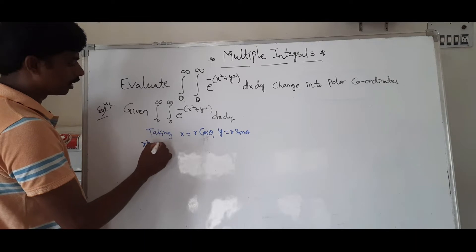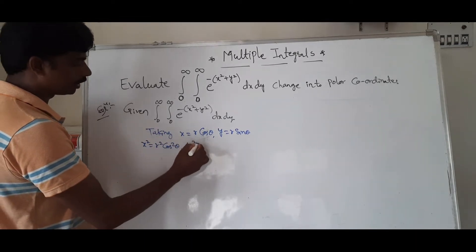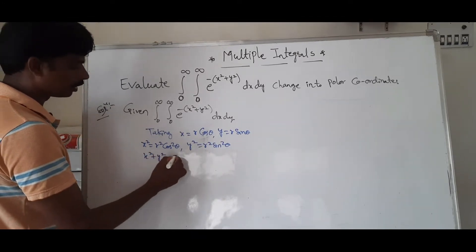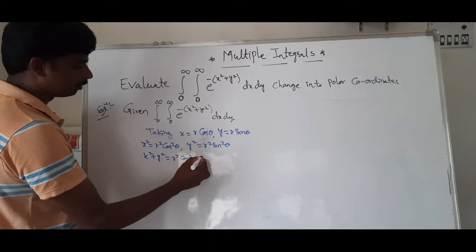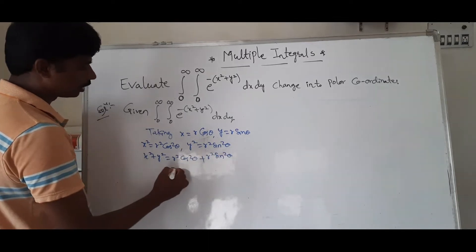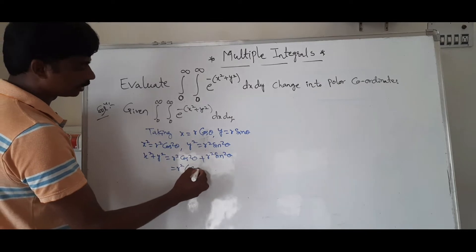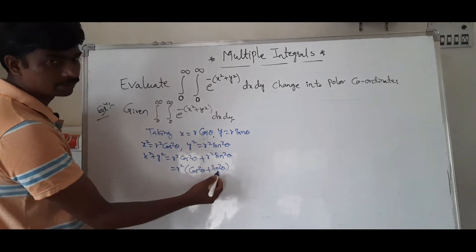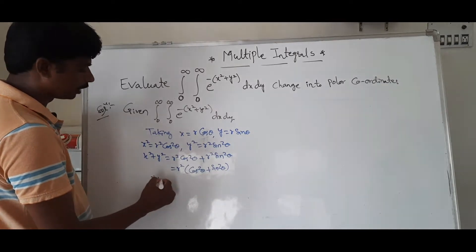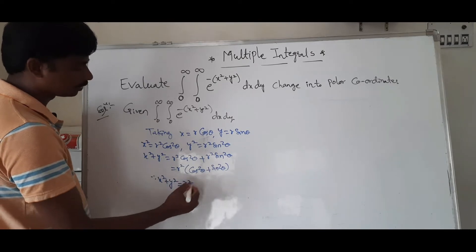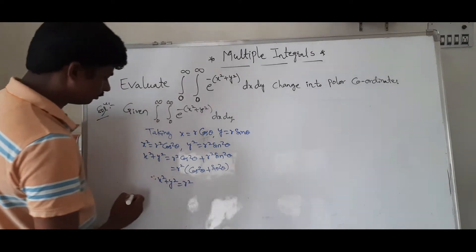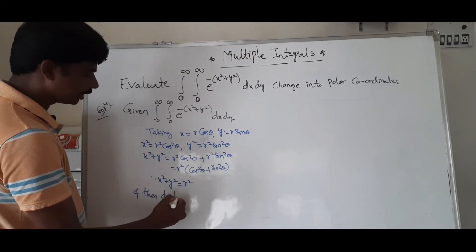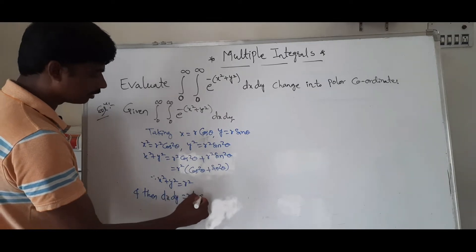x² = r² cos²θ, y² = r² sin²θ. So x² + y² = r² cos²θ + r² sin²θ. Factoring out r², and since cos²θ + sin²θ = 1, therefore x² + y² = r². Also, dx dy = r dr dθ.